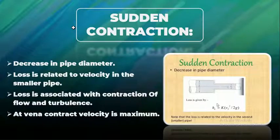Vena contracta is a region in a pipe where the diameter of the flow rate is minimum and hence loss is maximum. Due to this, minor losses due to sudden contraction occur.